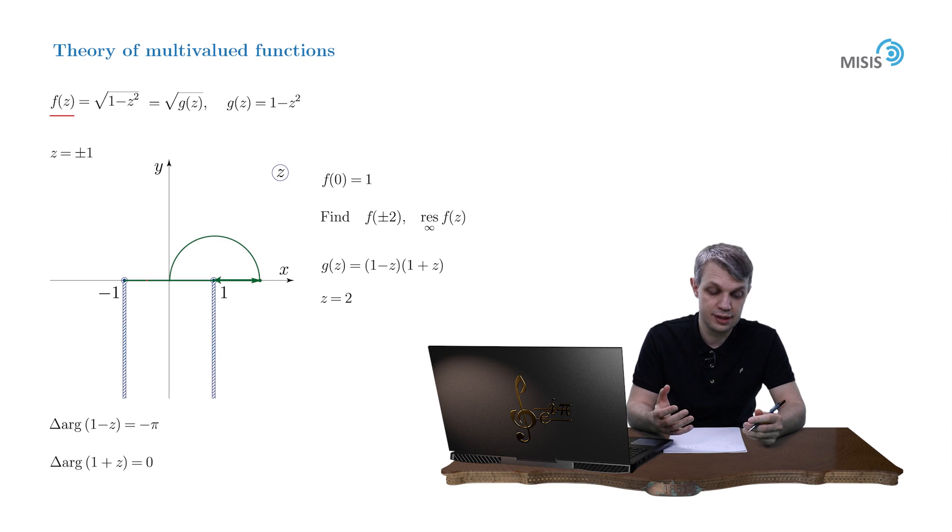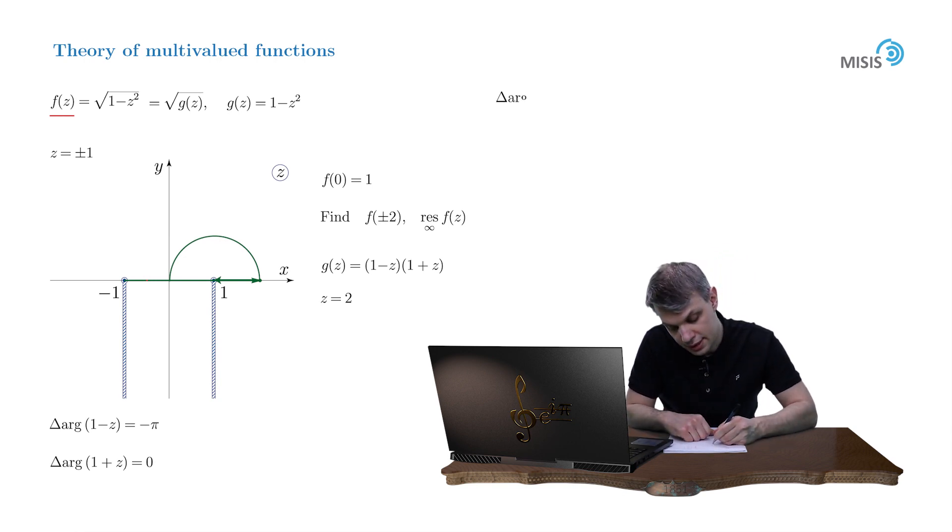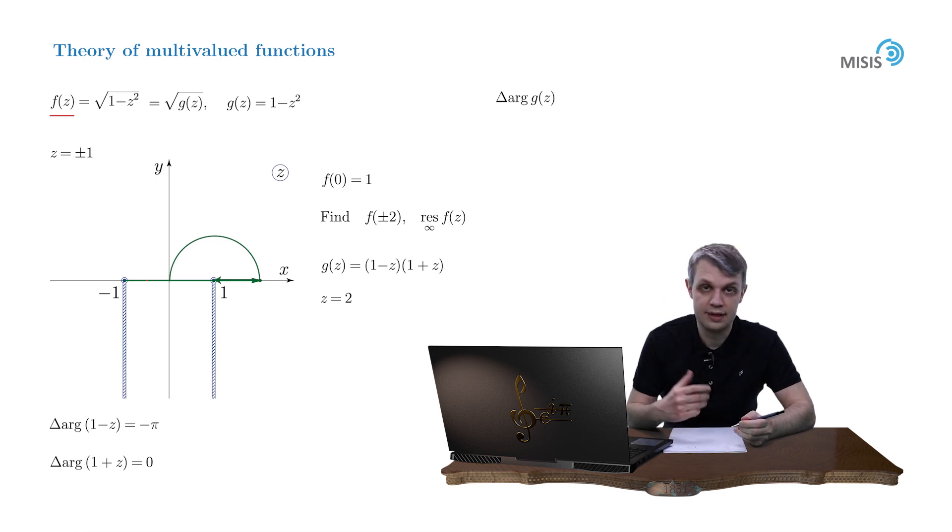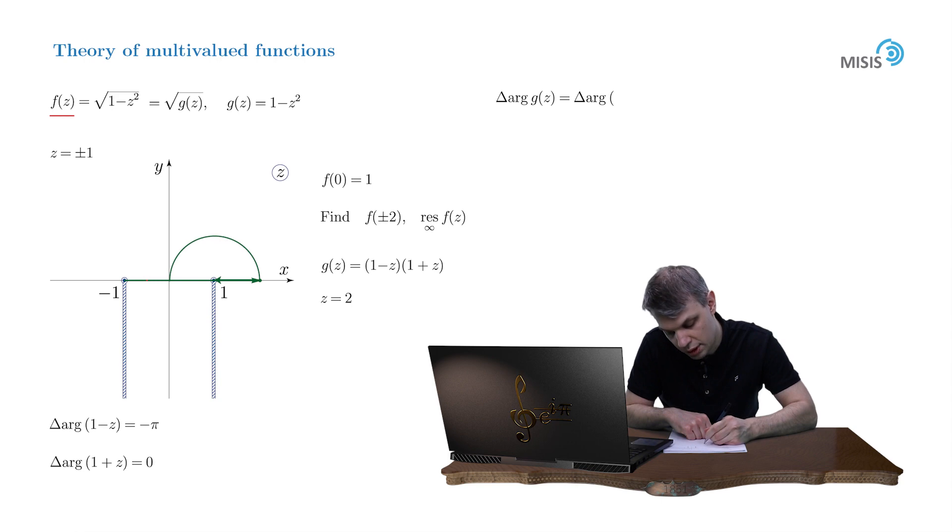Our g-function consists of the product of these two numbers, so its change of argument is simply the sum of the changes of its constituents. So it's delta argument of 1 minus z plus delta argument of 1 plus z. That's negative pi plus 0, which is negative pi.